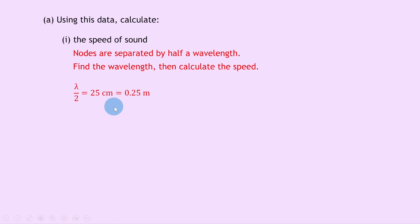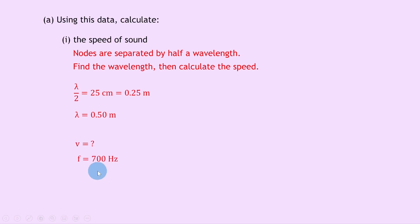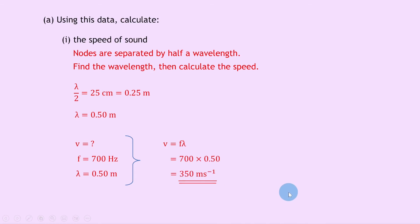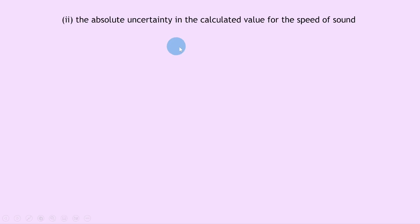Lambda over 2 equals 25 centimeters, which equals 0.25 meters, so the wavelength lambda is 0.5 meters. Using v equals f lambda, with f equals 700 Hz and lambda equals 0.5 meters, substituting in gives 700 times 0.5, which equals 350 meters per second.